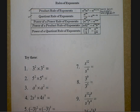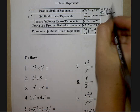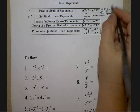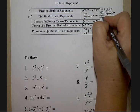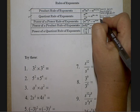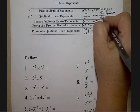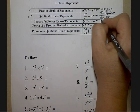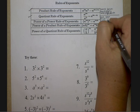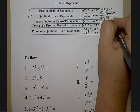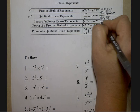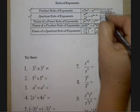The second rule says the same type of concept, but when you have the same base and you're dividing, you're going to subtract the exponents. So those are the first two rules.